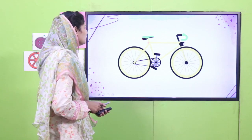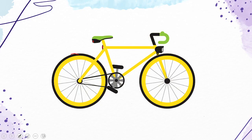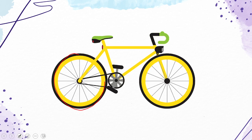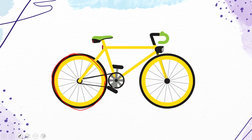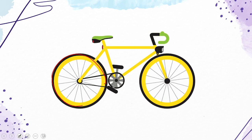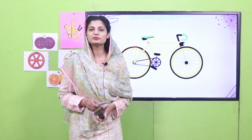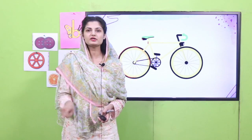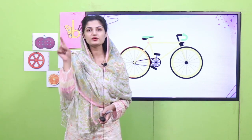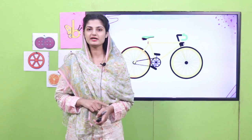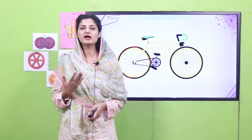Excellent playgroup! Now this is the bicycle — look at the tires of the bicycle, they are in circle shape. Which shape is it? This is a circle shape. So now do it and sing it with me: The wheels of the bicycle go round and round, round and round, round and round, all around the town. It was a very easy poem and you can always pause the video and repeat it as many times as you want.